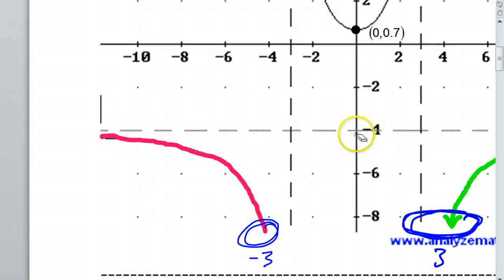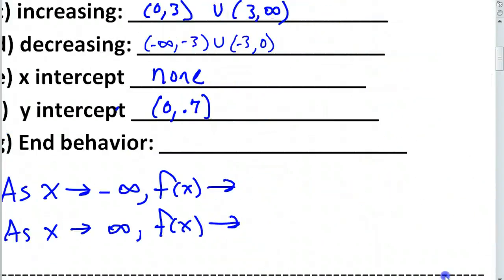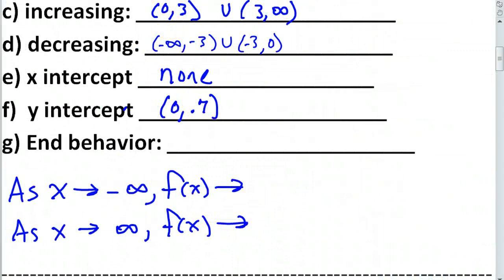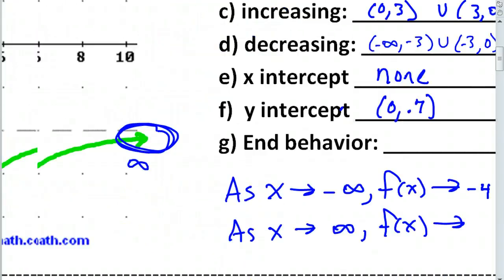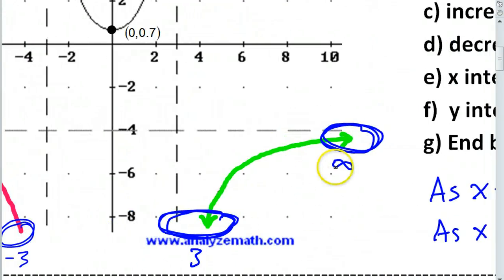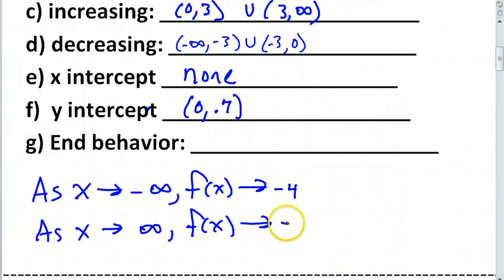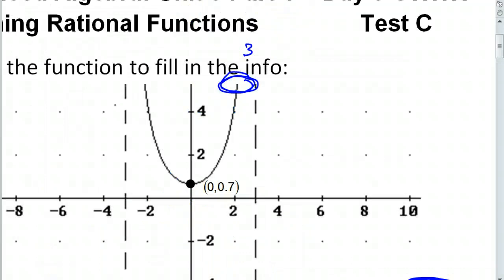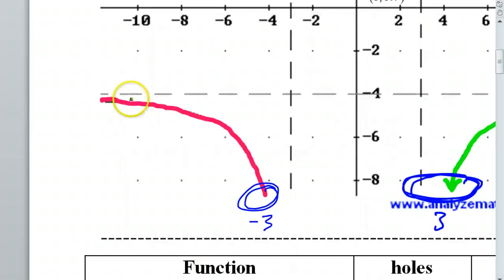Negative 4. Negative 4. Negative 4. Okay. So, on the left, we're approaching negative 4. Okay. A y value of negative 4. What about on the right? Negative 4. Negative 4 again. Because of the asymptote. Okay. So, that's it for problem number 1.